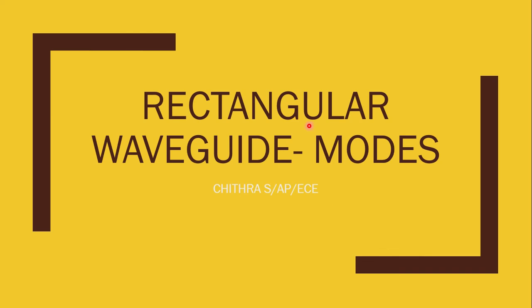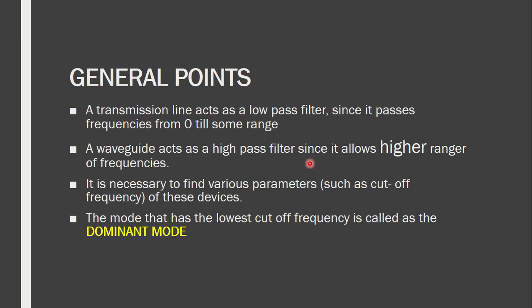Welcome to the PowerPoint presentation on the modes of the rectangular waveguide. Before moving on to the modes, we will have a small recap of the general points about transmission lines and waveguides. A transmission line is capable of transmitting signals from the lowest frequency till a particular frequency — from zero till some range — and so a transmission line is said to act as a low pass filter.